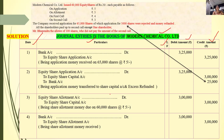Next entry is the allotment entry: equity share allotment account debit 3,00,000, to equity share capital account credit 3,00,000. That is 60,000 shares into 5 rupees allotment money = 3,00,000.